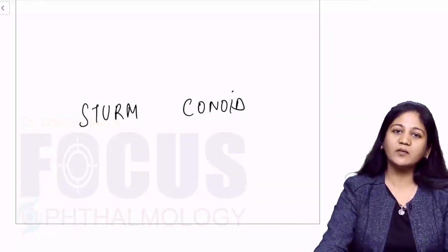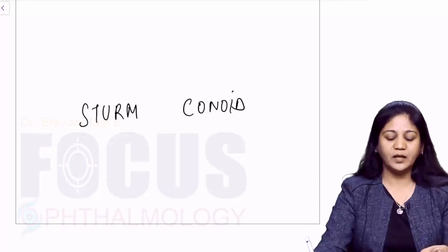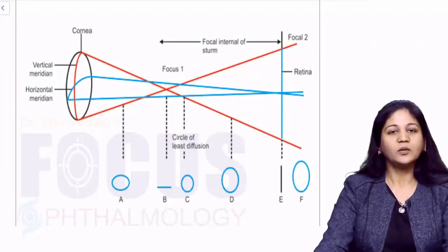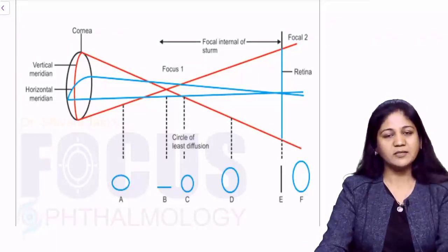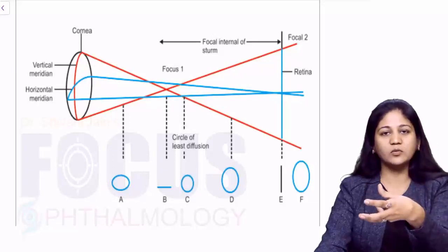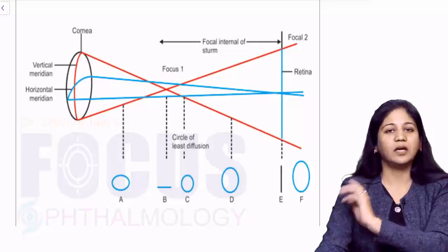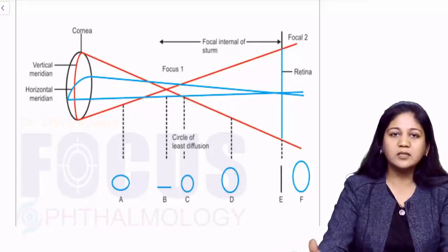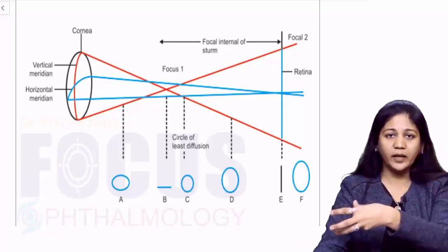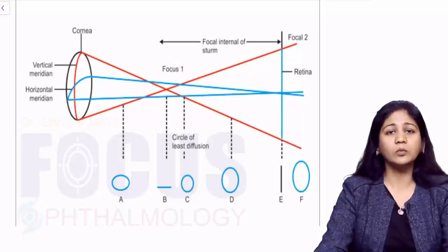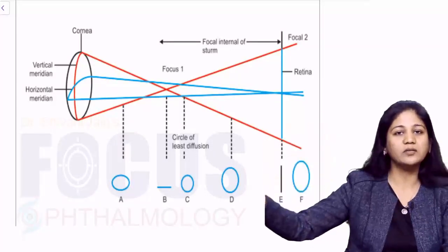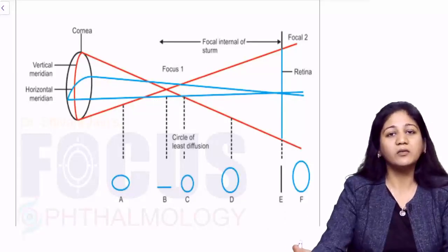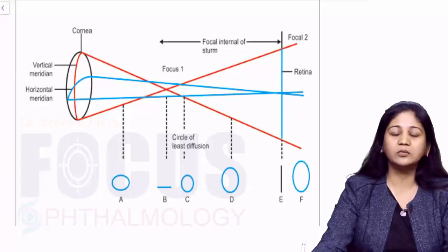Today we'll be talking about Sturm's Conoid. When there is a plane surface, parallel rays of light pass through it and are focused at one point. Consider a perfect optical condition where the patient is an emmetrope — parallel rays of light are going without any accommodation and they are focusing at one point on the retina. What happens when parallel rays of light refract through an astigmatic surface? This is all about Sturm's Conoid.